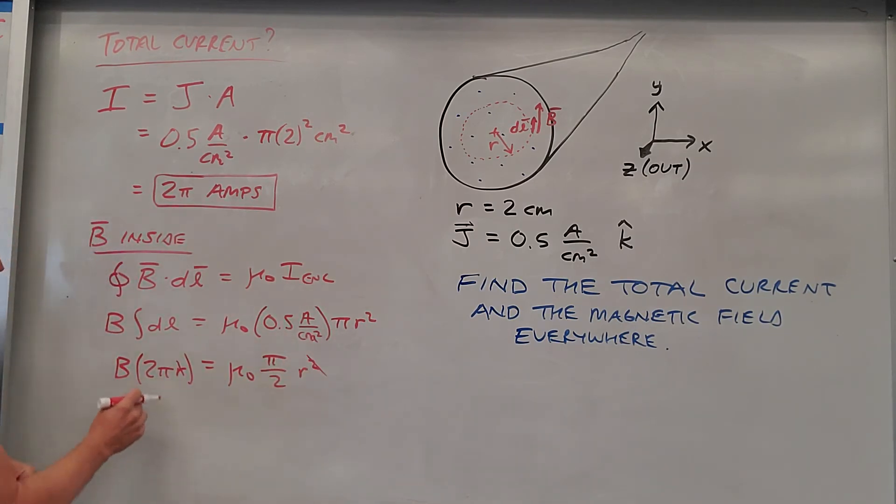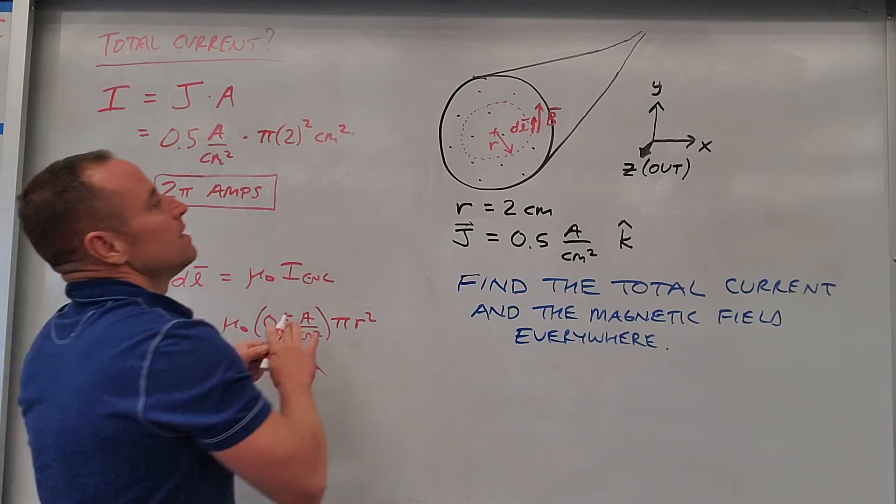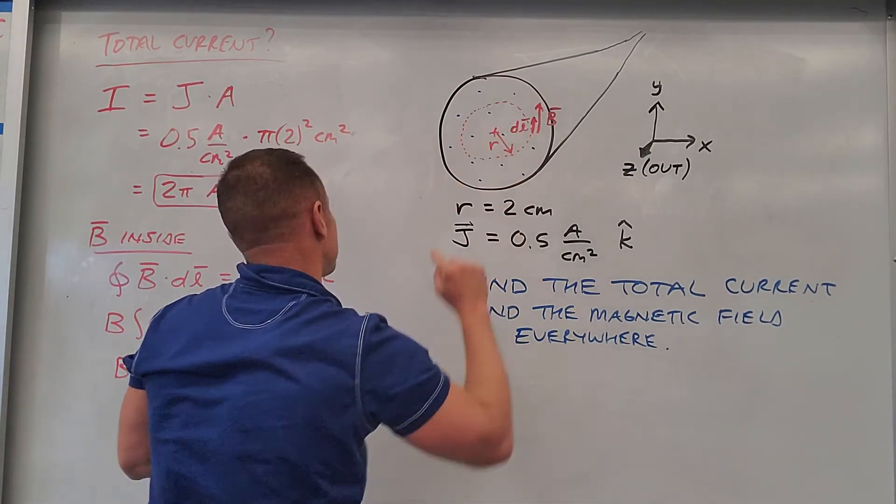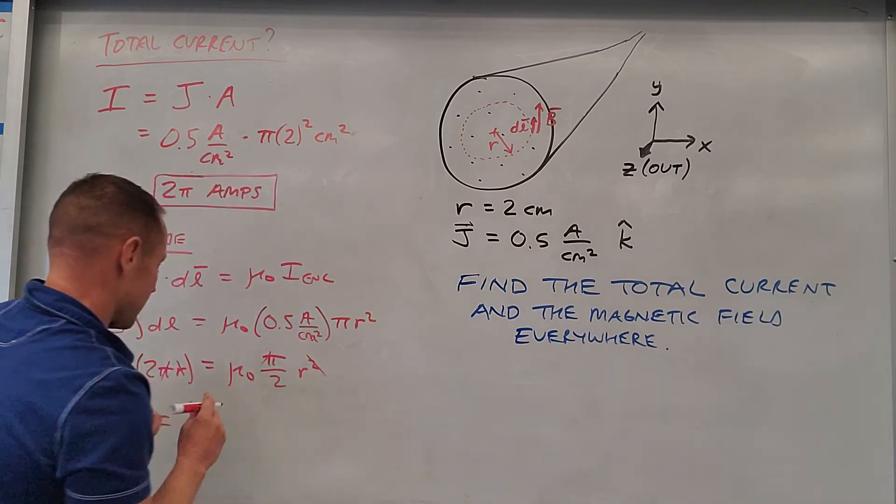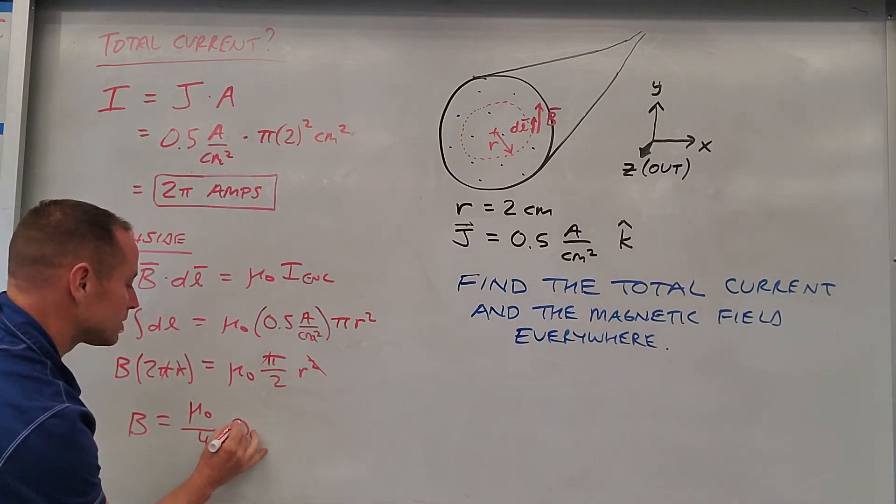as you make this circle bigger, you're going to capture more and more current. So you notice the r would cancel with this r², and then divide the 2π under. So what you get is B equals - well, the π's cancel too, so it looks like we get μ₀/4.